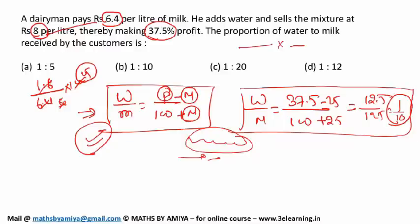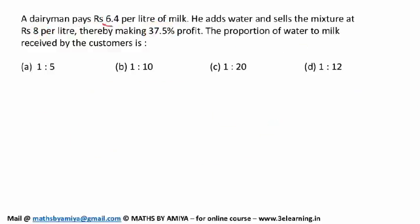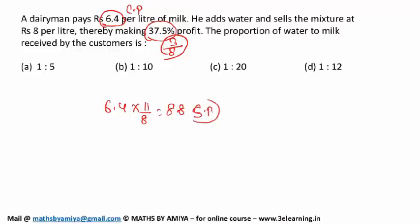Now this is one of my methods, or the second method is: you have 6.4 rupees as the cost price of the milk. So at 6.4, if you have 3 by 8 profit, that is nothing but 8.8 should be the selling price if only this milk has 3 by 8 profit.